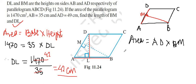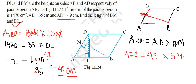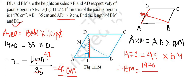The area of the parallelogram is given as 1470 square centimeters, which equals AD × BM. The length of AD is also given as 49 centimeters. So BM is the perpendicular distance on AD from B, which we need to find. Therefore, BM = 1470 ÷ 49.